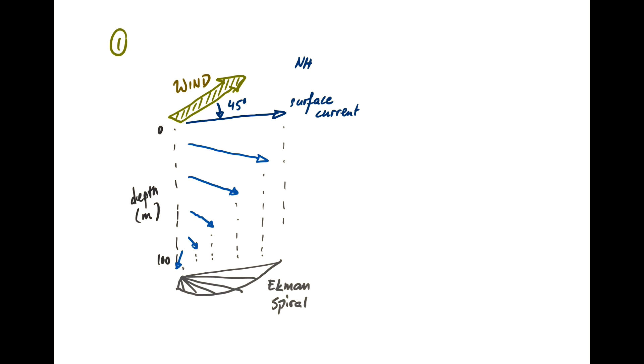And as a result, if you integrate over the whole depth, you get transport to the right of the wind in the northern hemisphere of this surface mixed layer. So the net transport is not actually in the direction of the wind, but 90 degrees to the wind.